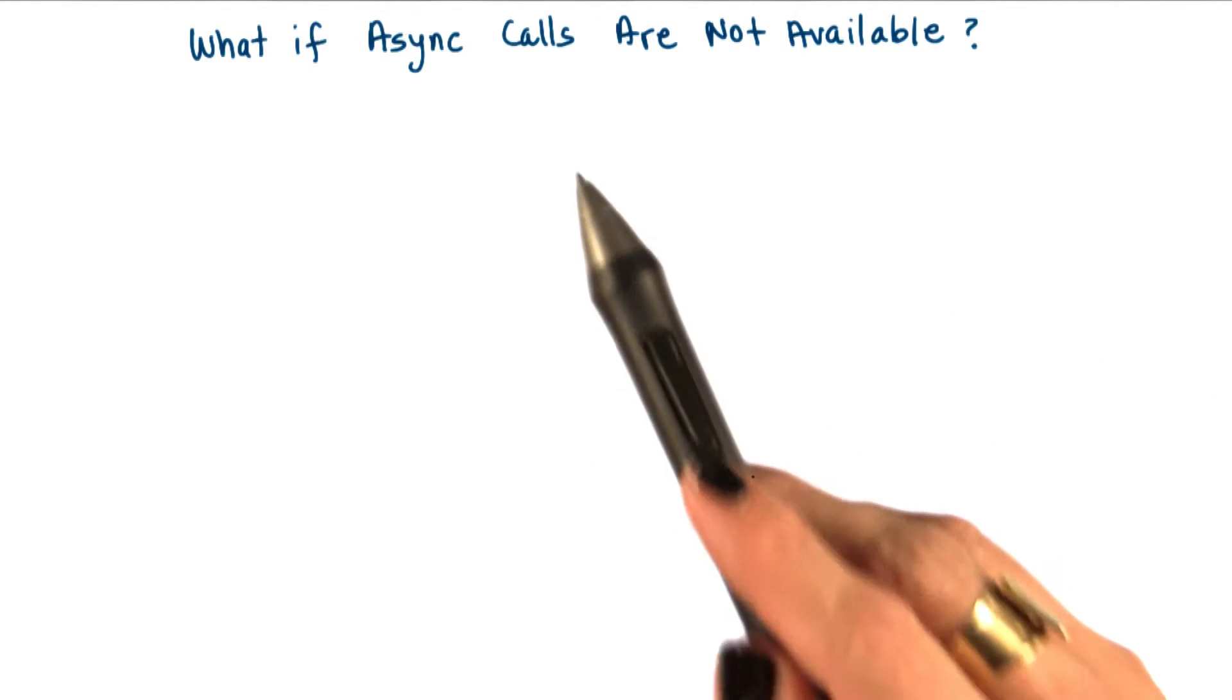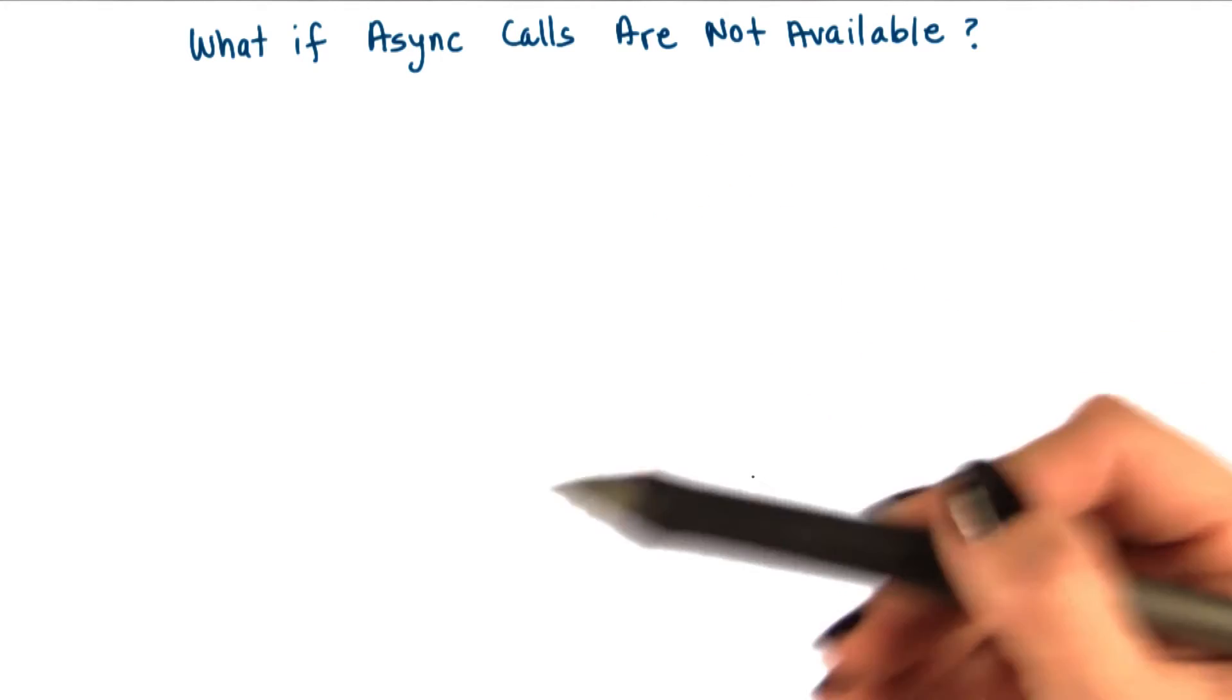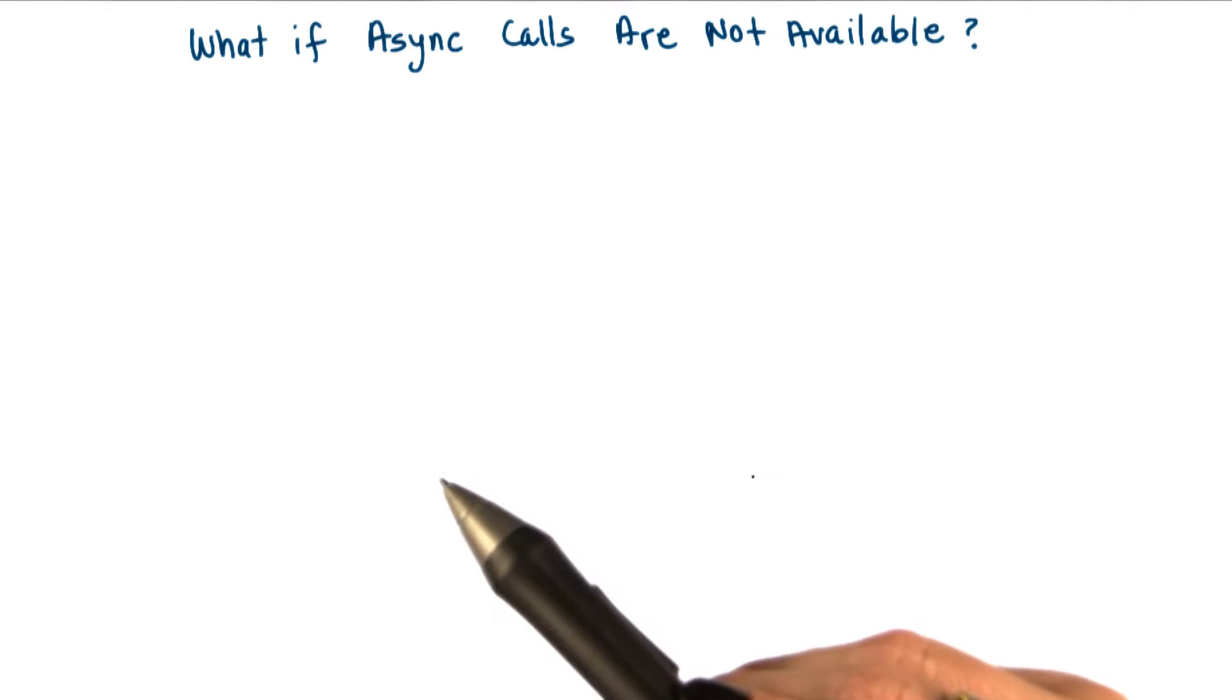The problem with asynchronous IO calls is that they weren't ubiquitously available in the past, and even today, they may not be available for all types of devices.